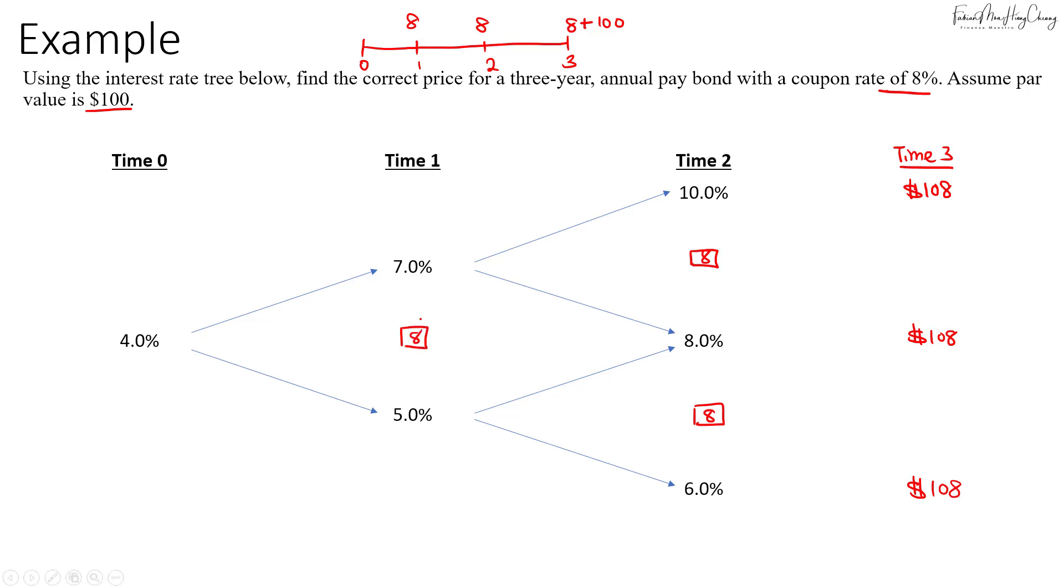So now what we do is we discount each of these cash flows back to the previous period using the one period forward rate. So first off, for this $108, I'll discount it back at 10%. So if I take $108 discounted at 10%, that will give us a value of 98.182.